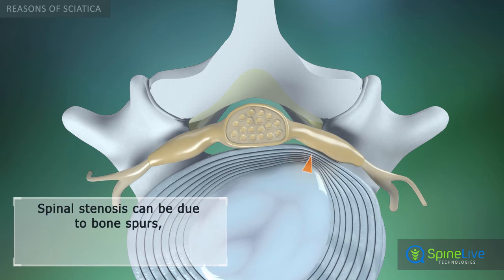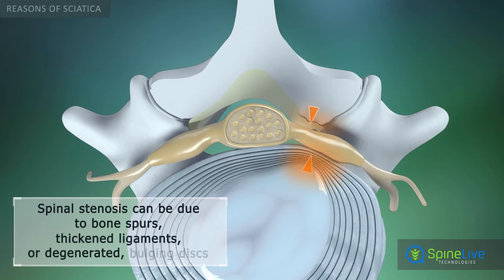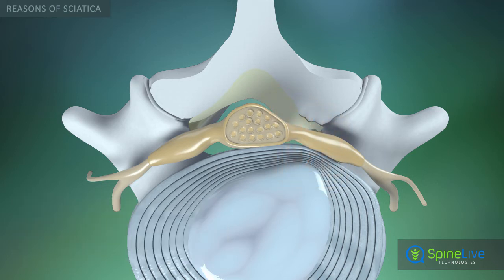Spinal ligaments thickening and bone spur overgrowth. Compression of the spinal nerves in the lumbar spine is the most common reason for sciatica.